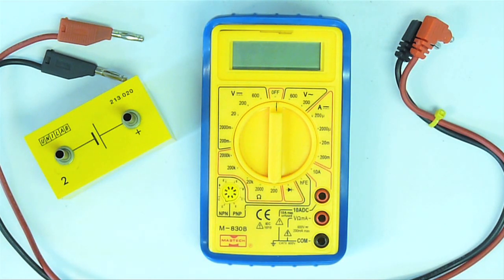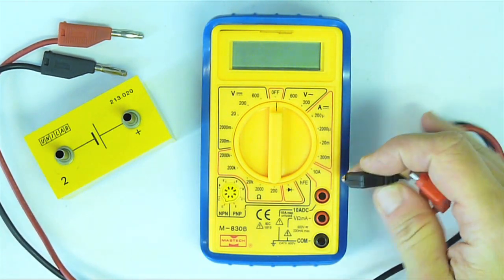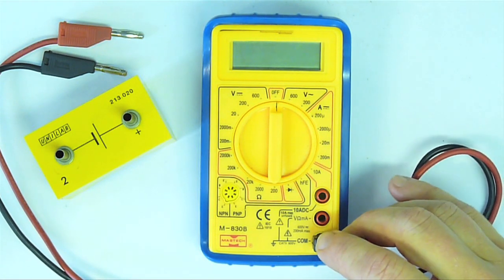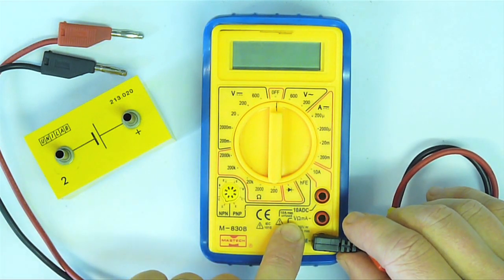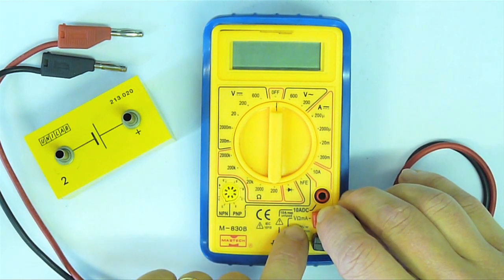To use it to measure voltage, I'm first going to plug in the leads. The black lead always goes in the black socket marked common. To measure voltage, I'll plug the red lead in here where it's marked V.